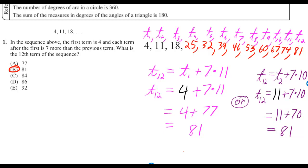I label the first term T1 for term number 1, and then T2, T3, going all the way out until T12. You can go directly from the first term to the 12th term by adding 7 a certain amount of times. We will only need to add 11 sevens.